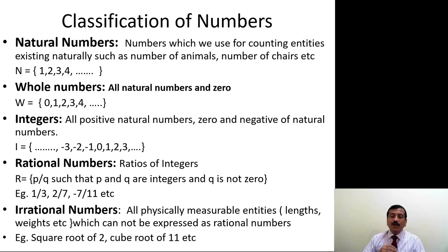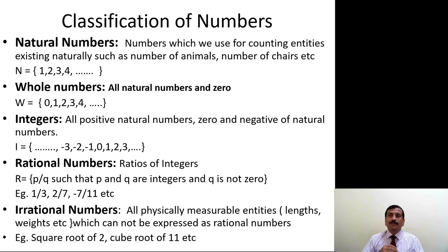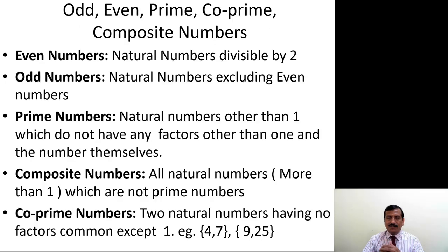Irrational numbers are all physically measurable entities like lengths and weights which cannot be expressed as rational numbers — for example, the square root of 2. Consider a right-angle triangle having one leg as 1 and the other leg as 1, making a right angle. The length of the hypotenuse will be root 2. It is a physical entity but cannot be expressed as a ratio of two integers. All such numbers are irrational numbers.